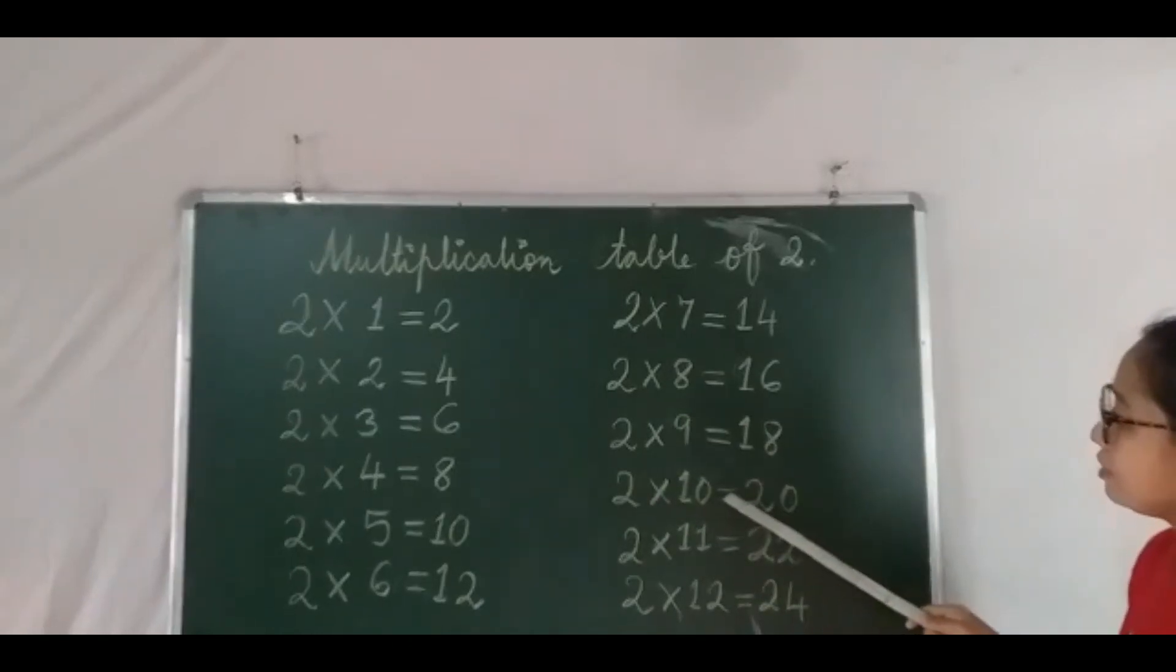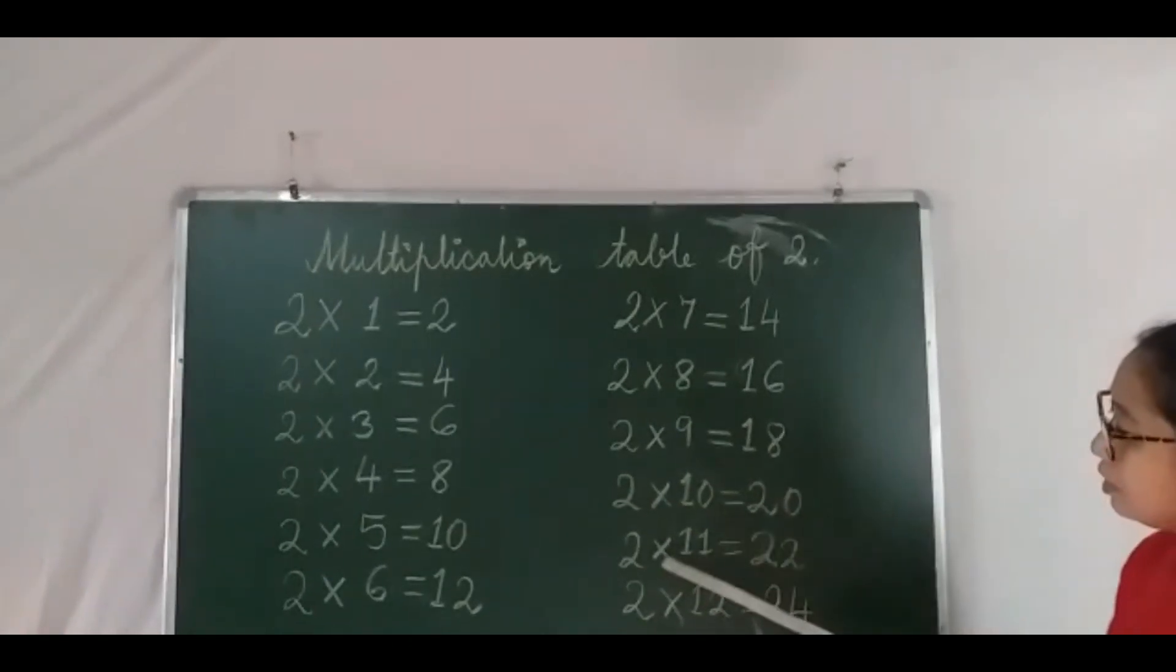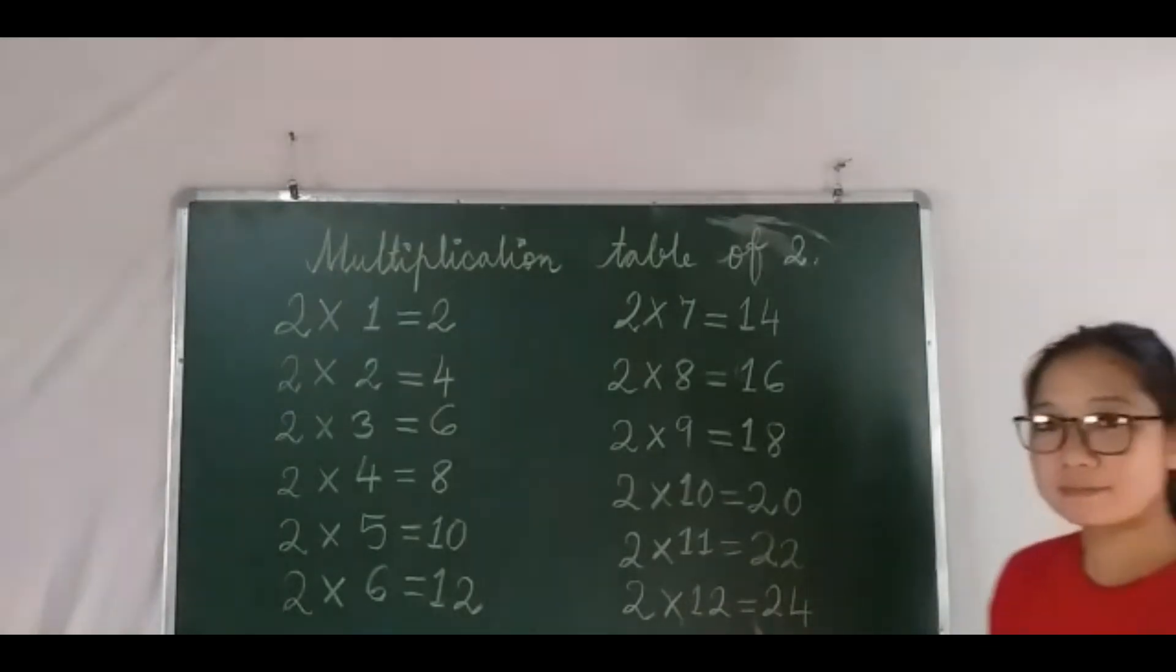Two tens are twenty, two elevens are twenty-two, two twelves are twenty-four.